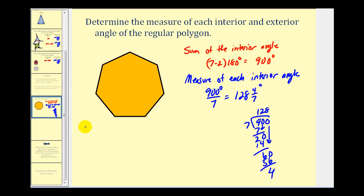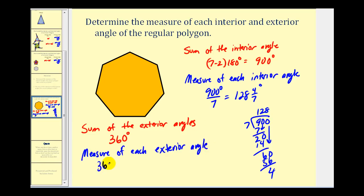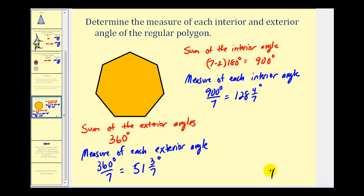For the sum of the exterior angles, we now know it will always be 360 degrees. And since we have a regular polygon, the measure of each exterior angle will also be the same. So we'd have 360 degrees divided by seven, which gives us 51 and three-sevenths degrees.